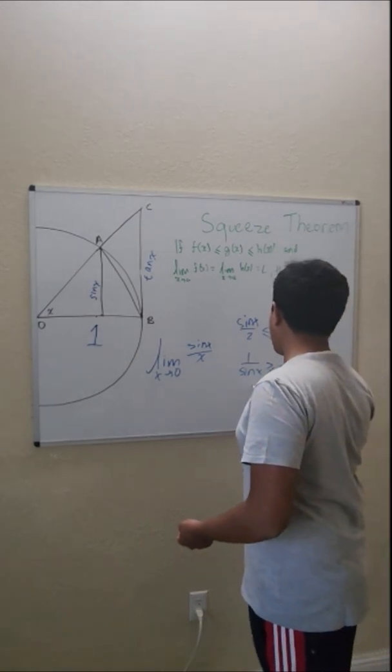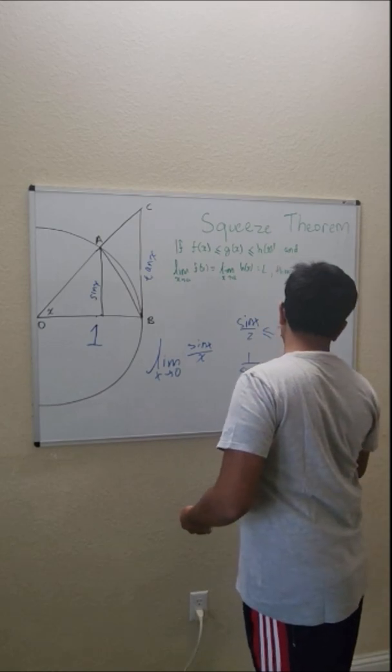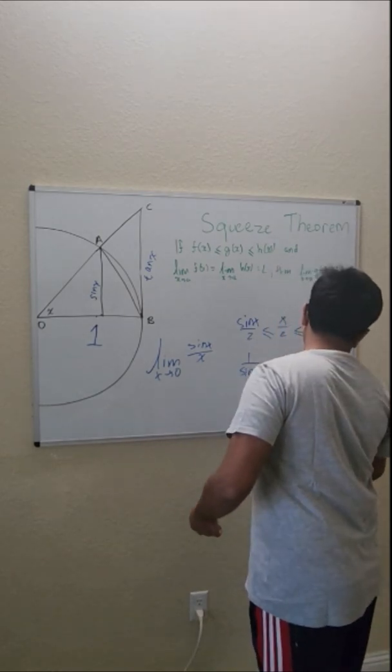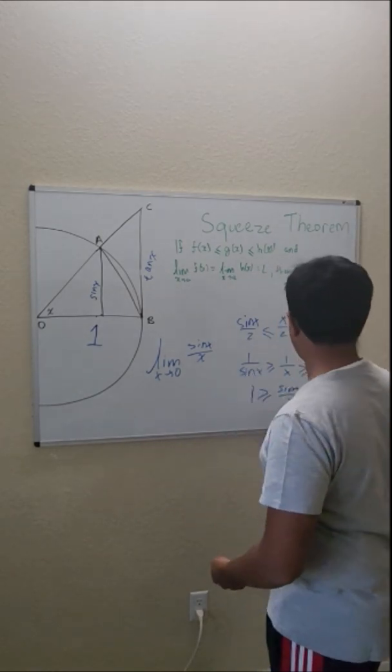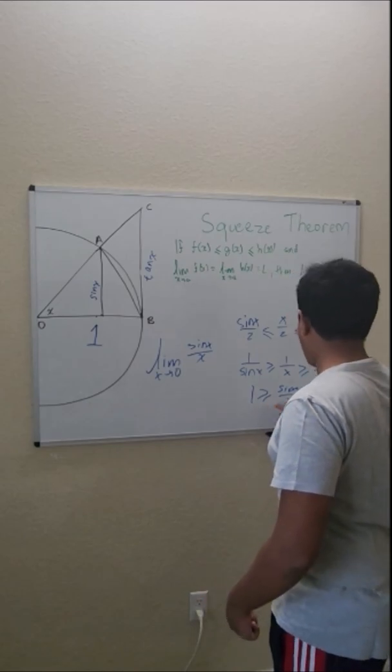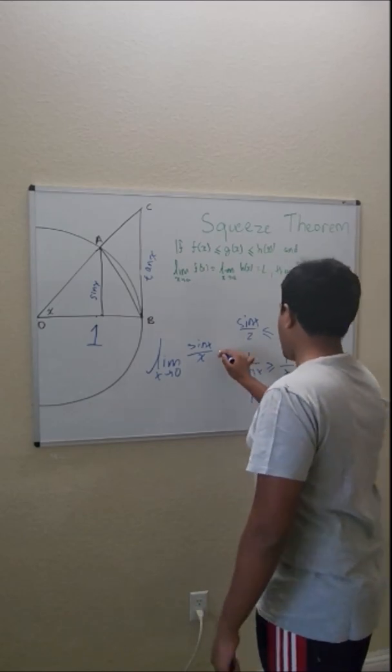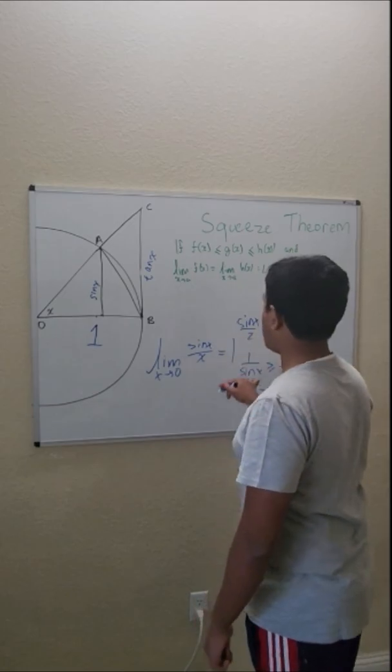And then we multiply both sides by sine of x and we get 1 greater than or equal to sine of x over x greater than or equal to cosine of x. And since both of these terms go to 1 as x goes to 0, sine of x over x must also go to 1.